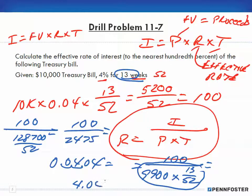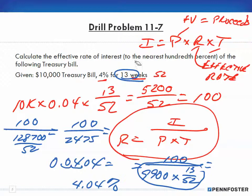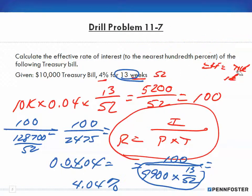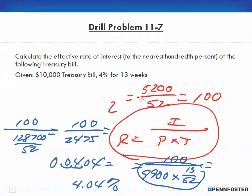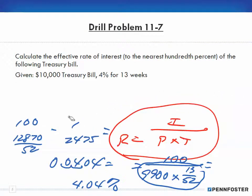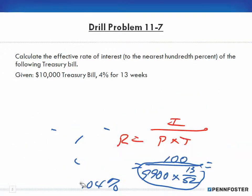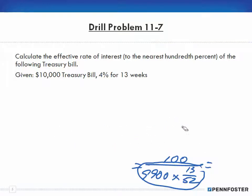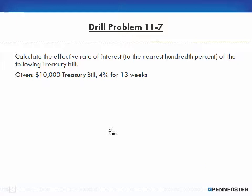That decimal 0.0404 — to convert it to a percentage, we move the decimal two places to the right, giving us 4.04%. That's it for this problem. I'm going to take a couple of minutes to go over it and make it a little cleaner. Let me erase all of this and give a quick summary.